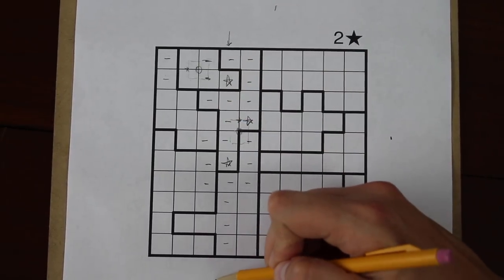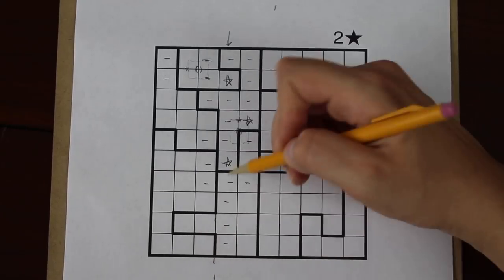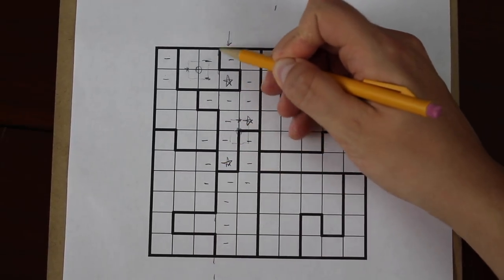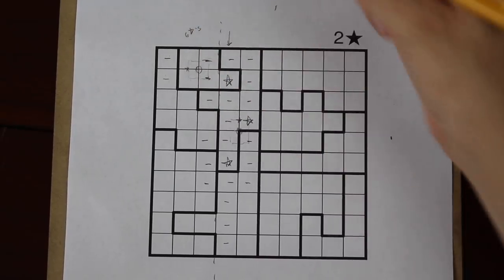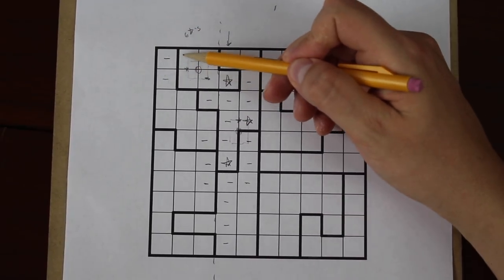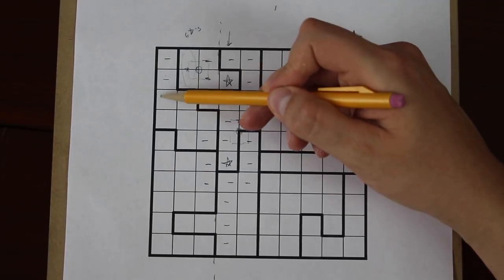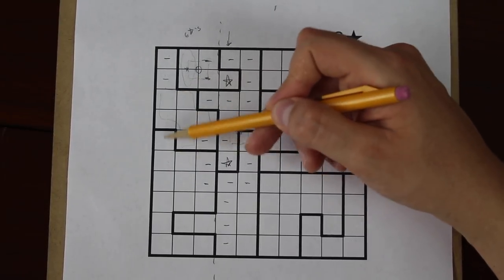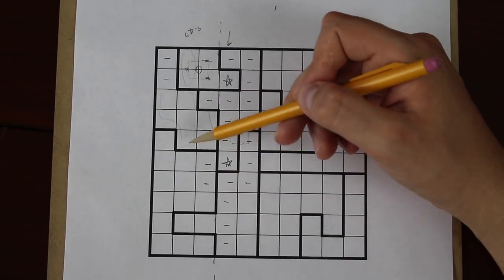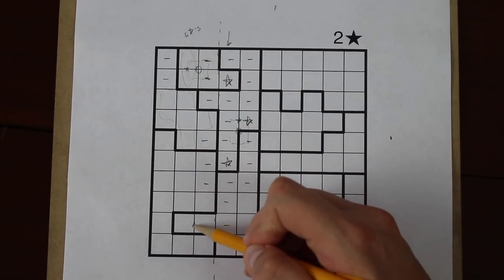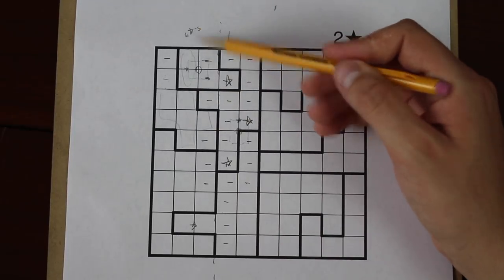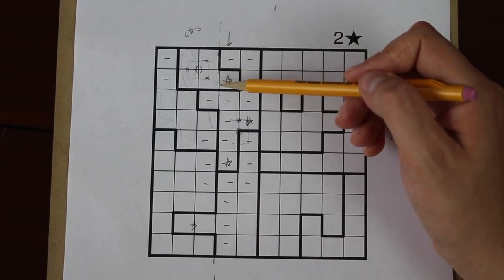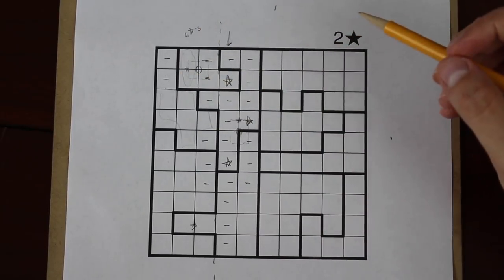Now if you notice, these first three columns have an interesting property. They must contain six stars. There's going to be one star here, there's going to be two in this region, and another two in this big region here. Which means there must be a star here as well. Otherwise you wouldn't be able to fit six stars into those three columns. That's a common technique in star battle.